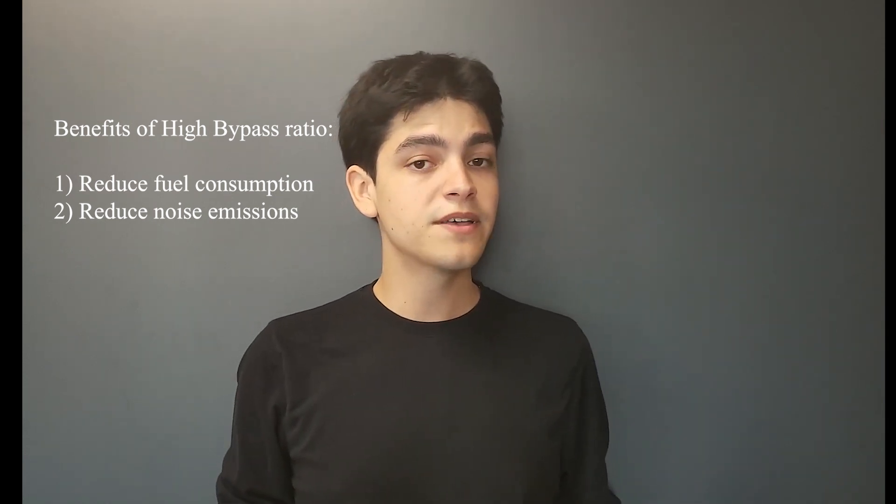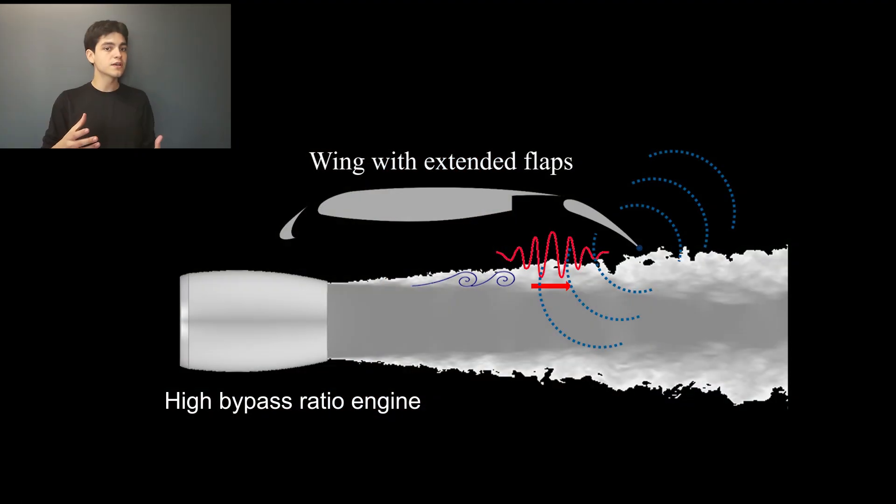However, the increase of this bypass ratio also has a drawback. With the engines becoming larger, they have to be mounted closer to the wing, and then there is an interaction between the exhaust flow that comes out of the engine and the wing, particularly if the high-lift devices are deployed for takeoff or approach flight conditions, for example.